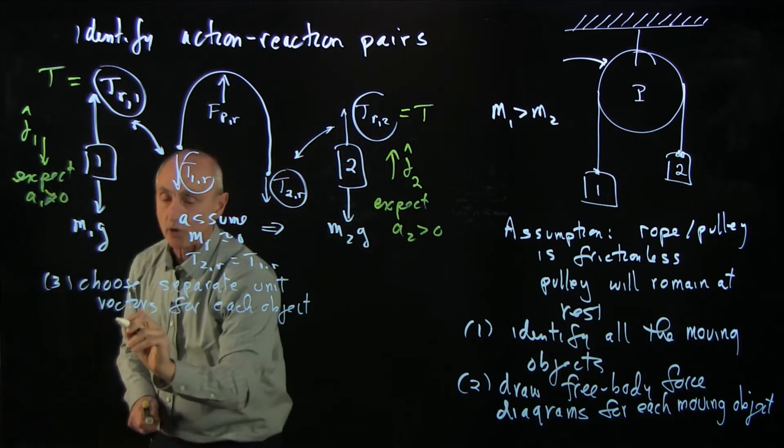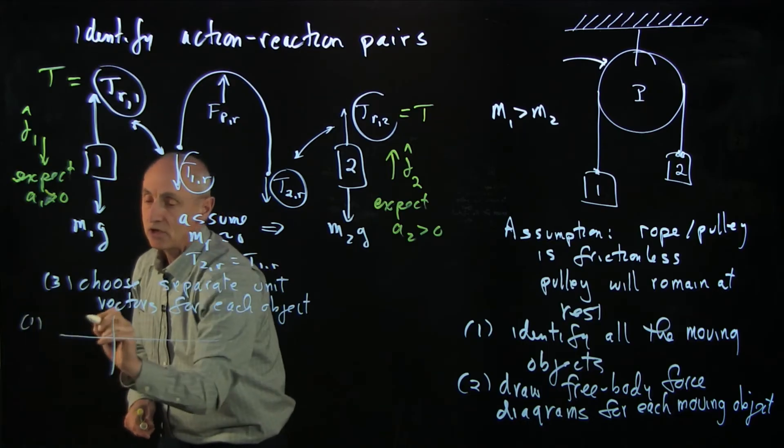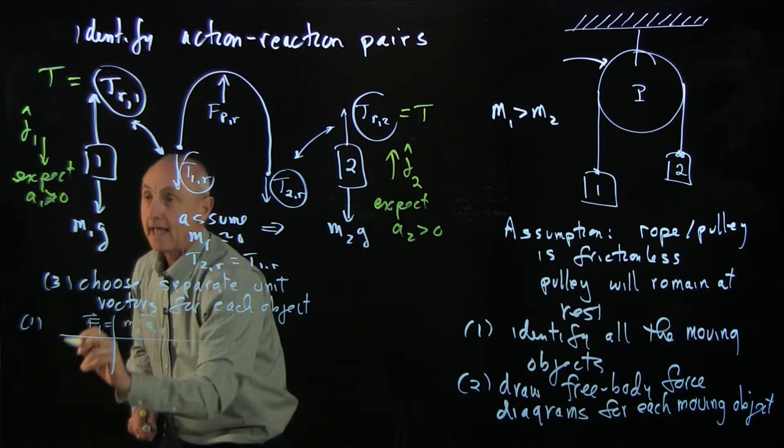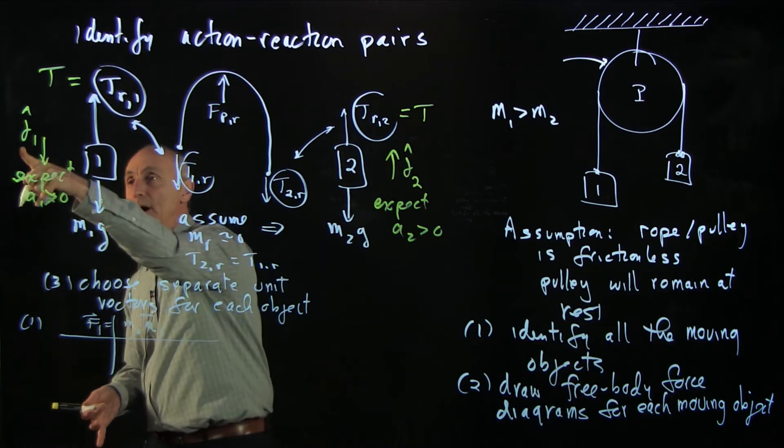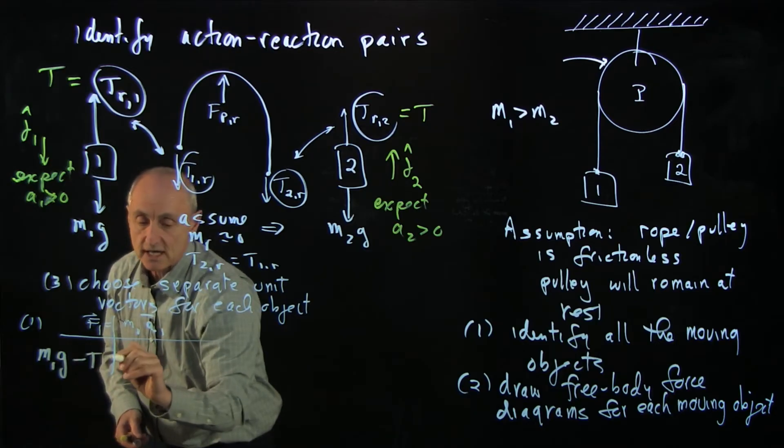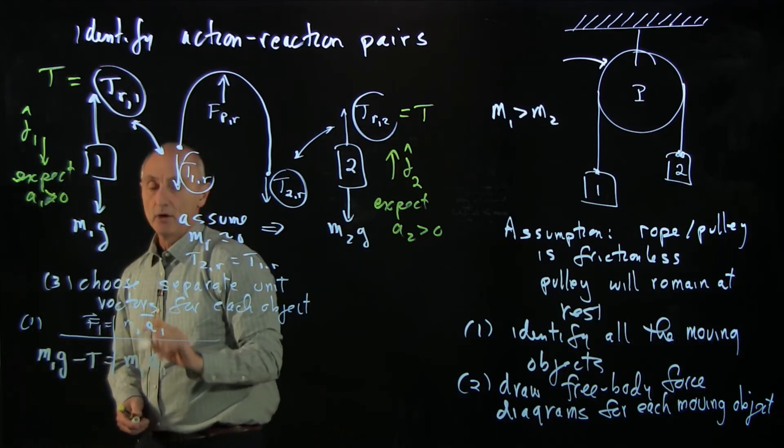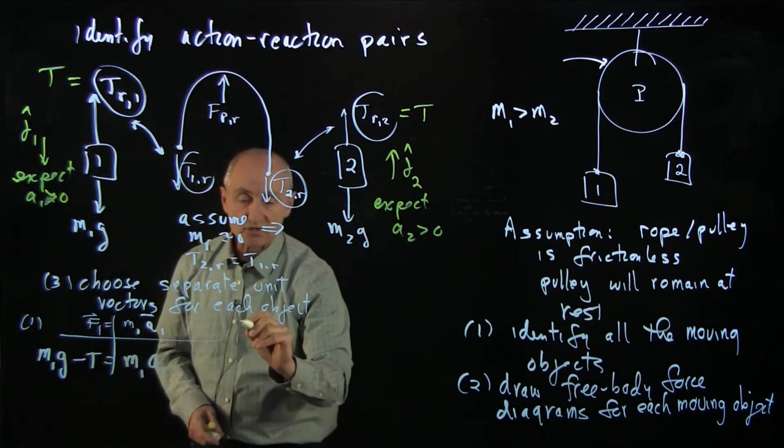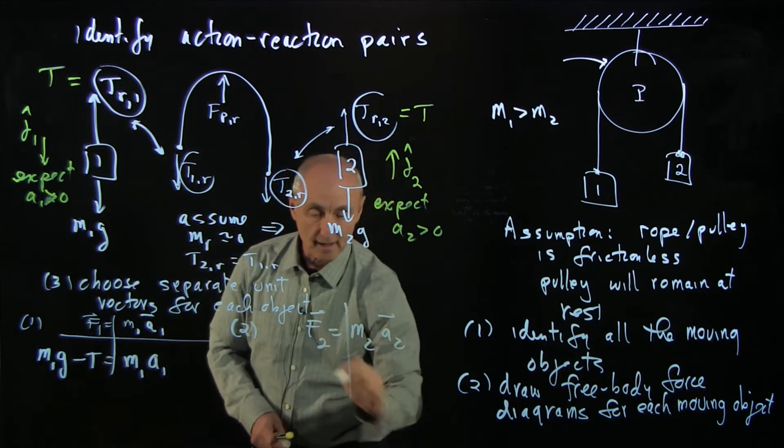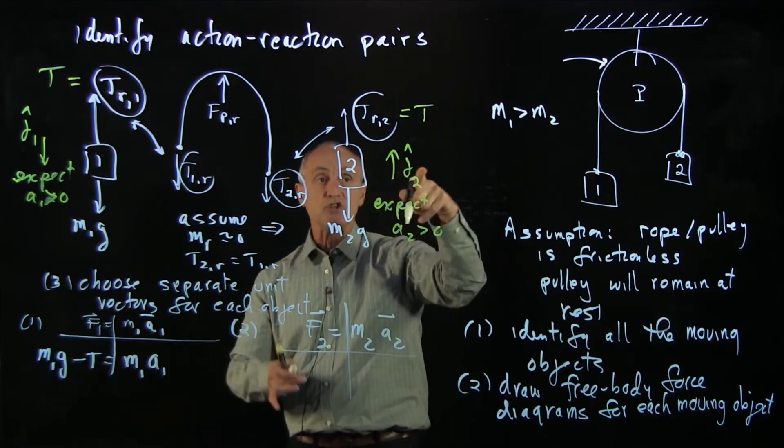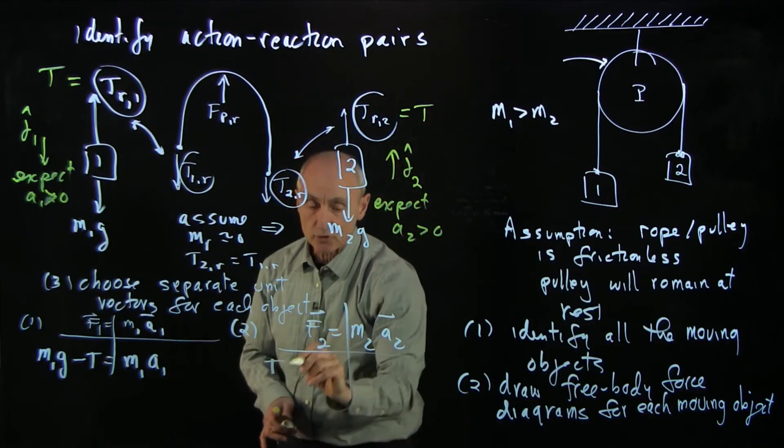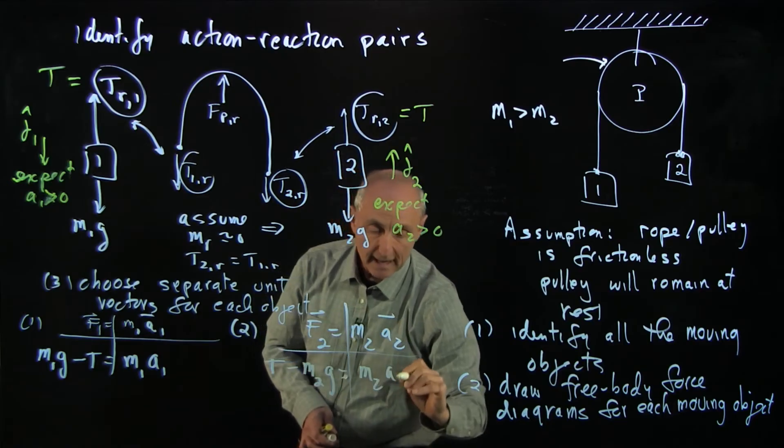This is where a lot of people get tripped up. Here I'm choosing j hat 2, and when I choose that, I expect a2 to be positive because 2 is going up in the direction of j hat. And here I expect a1 to be positive also because 1 is going down. Now I can draw Newton's second law on 1. I have f1 equals m1a1. I analyze my forces. m1g is in the positive j hat direction, t is in the negative j hat direction. So I have m1g minus t equals m1a1, which I'm expecting to be positive. In the same way, on 2, f2 equals m2a2. I look at my force diagram. J hat is up, so t is positive. m2g is minus my direction. t minus m2g equals m2a2.